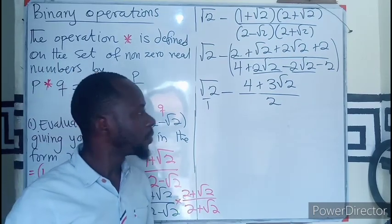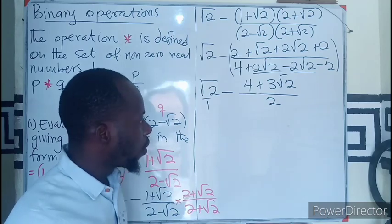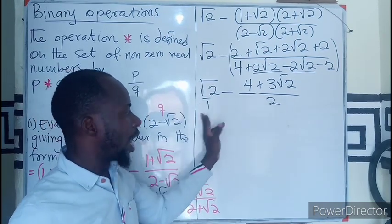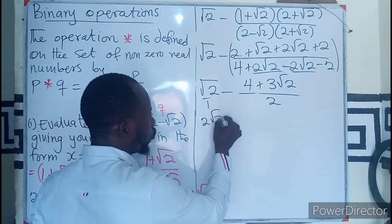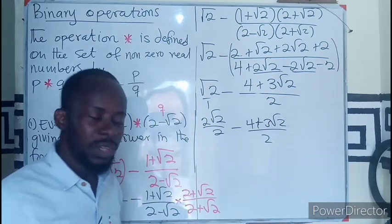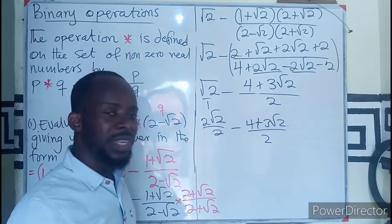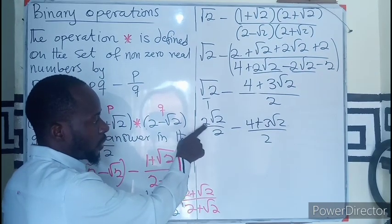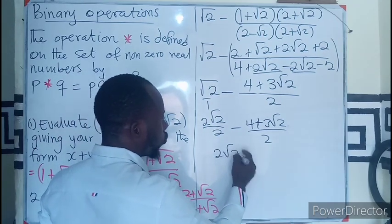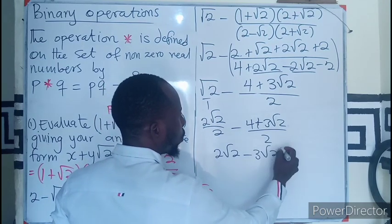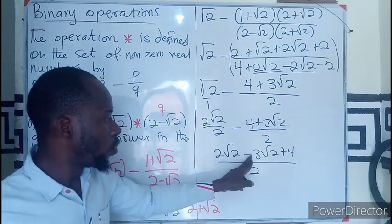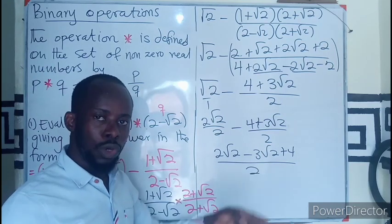The denominator is now rational so no further rationalization is needed. We treat this as two fractions. To combine them, we find a common denominator. Multiplying the top and bottom of the left term by two gives two root two over two, and the other fraction is four plus three root two over two. With equal denominators we can combine numerators: two root two minus three root two plus four, all over two.